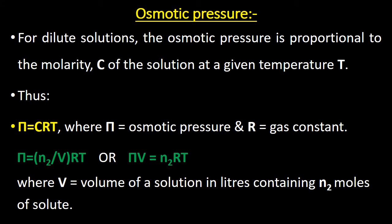For dilute solutions, the osmotic pressure is proportional to the molarity C of the solution at a given temperature T. Thus, π (osmotic pressure) = CRT, where π is osmotic pressure, R is the gas constant, and T is the absolute temperature. Alternatively, π = (N₂/V) × RT, or πV = N₂RT, where V is the volume of the solution in liters containing N₂ moles of the solute.